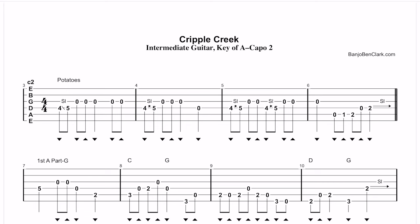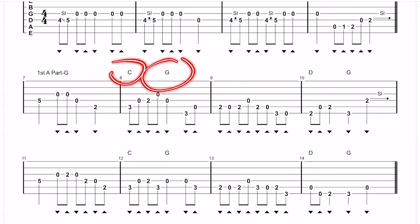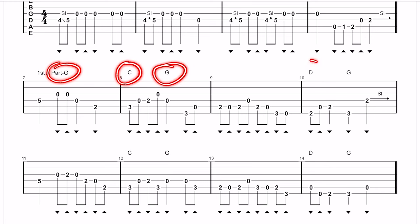The chords are G, C, and D. But because we have the capo on the second fret, everything that comes out is in the key of A. The chord notations are in the key of G, so if you're playing rhythm along with this, you would capo up two and play a G chord, split a measure C, G, split a measure D, and G. But because you have the capo on, they're actually in the key of A.